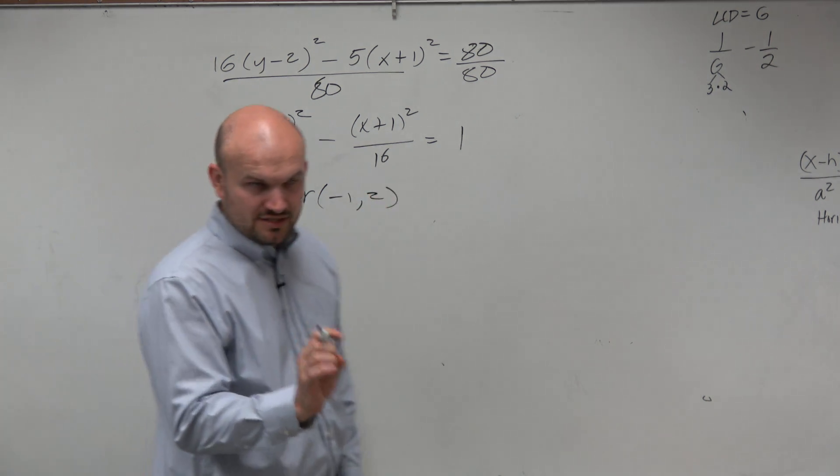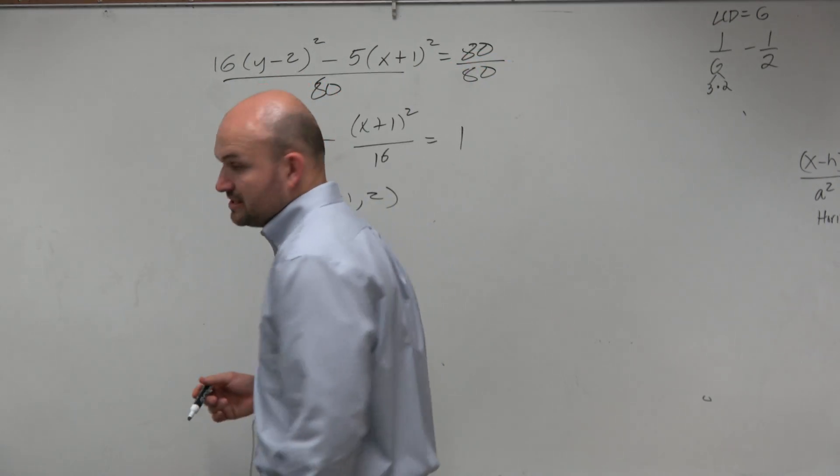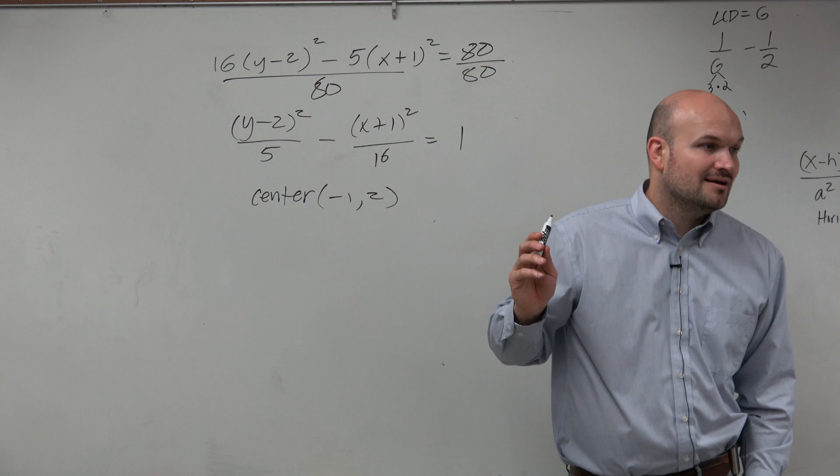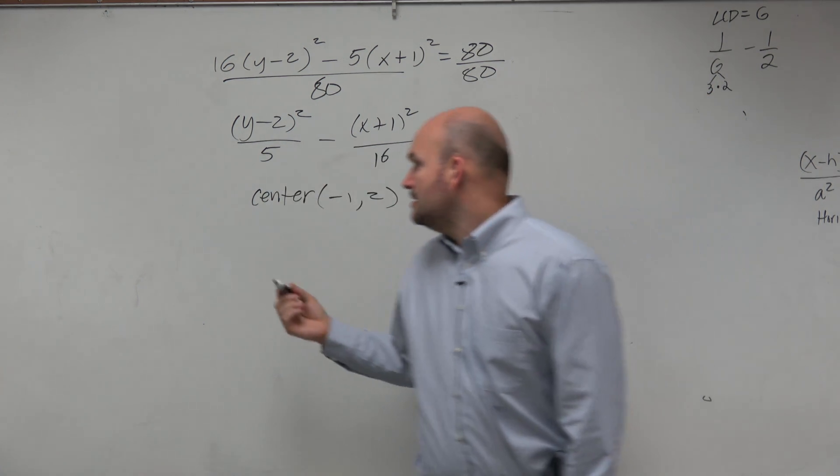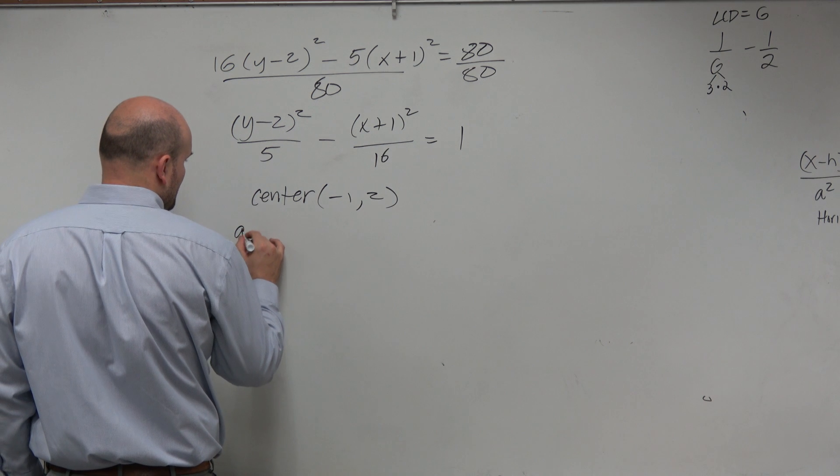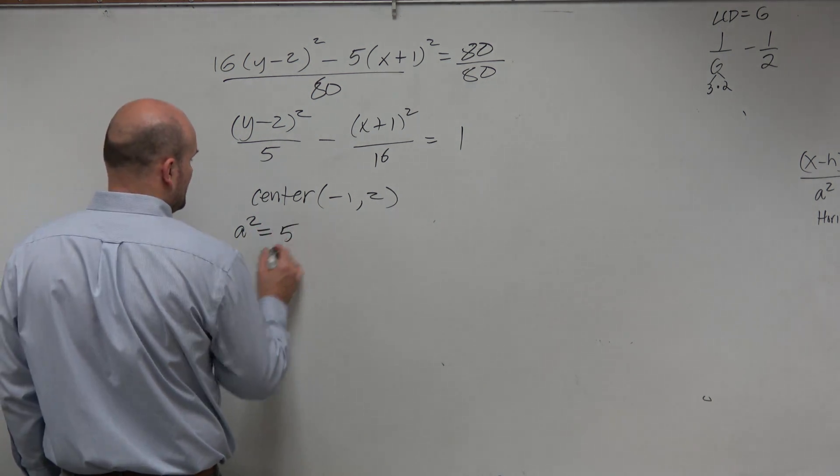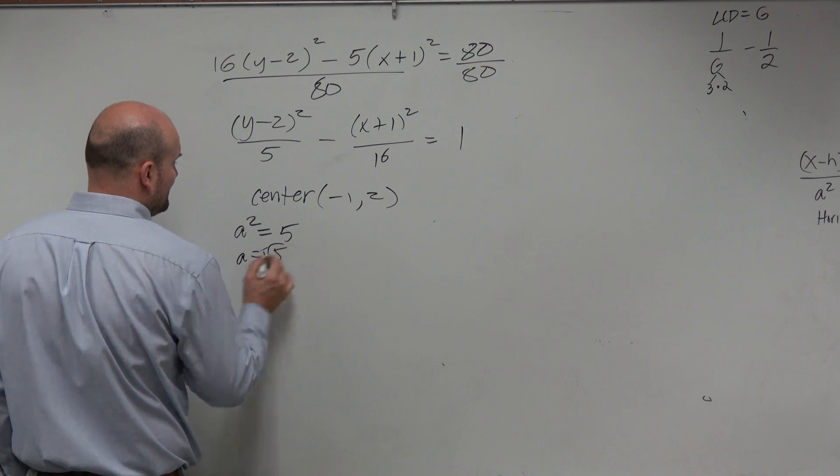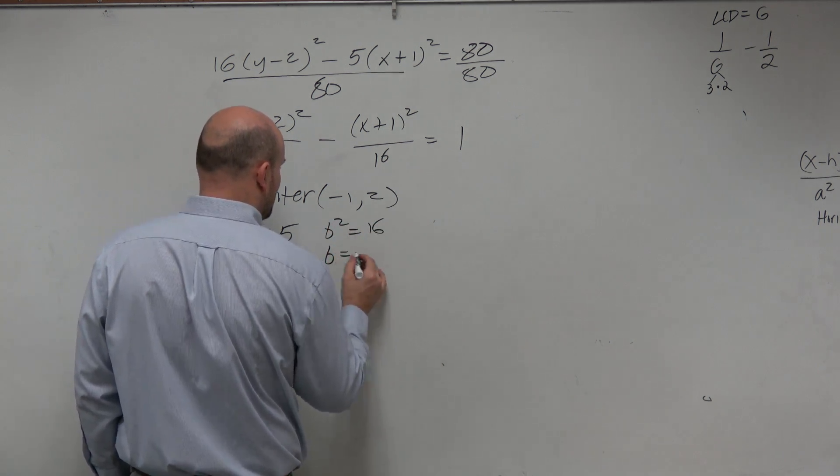Just remember, h is always with x, k is always with y. Remember, our equation, does a² equal 16? Don't fall for it, right? It's a² minus the b². So in this case, my a² is going to be equaling 5. Therefore, a equals square root of 5. b² is equal to 16, so that means b equals 4.